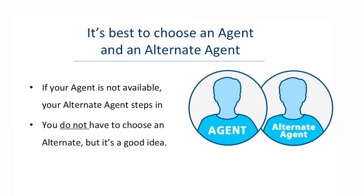It's best to choose an agent and an alternate agent. Your alternate agent is your backup agent — if your agent is not available, your alternate agent steps in with that same power to get you good care. Sometimes it's hard to identify an alternate agent, and that's okay. You don't have to choose one in order to sign a healthcare proxy, but it's a good idea if you can.